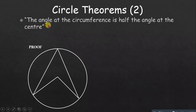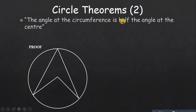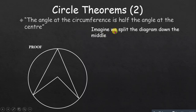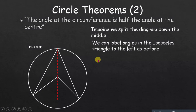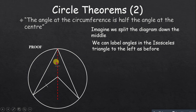Now let's prove that the angle at the circumference is half the angle at the center — this is the property used in proving the previous theorem. We split the diagram into two from the center. We can label the angles in the isosceles triangles on the left, calling them associate triangles because two sides are radii and therefore equal.